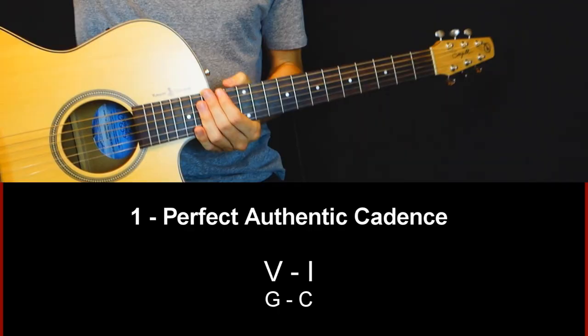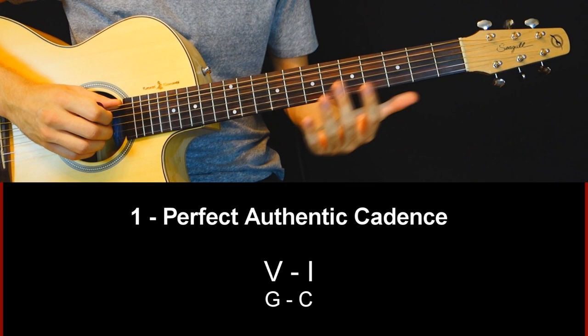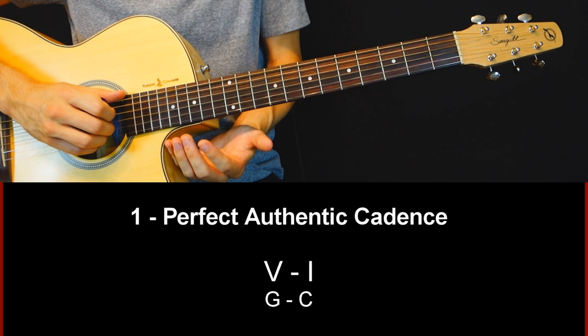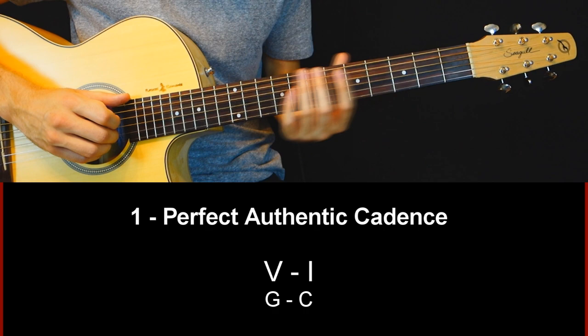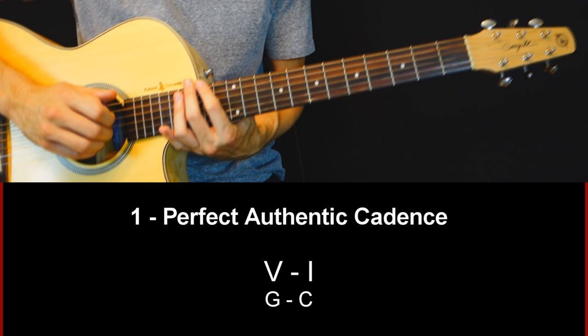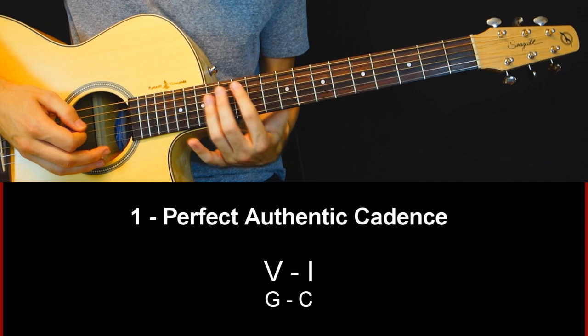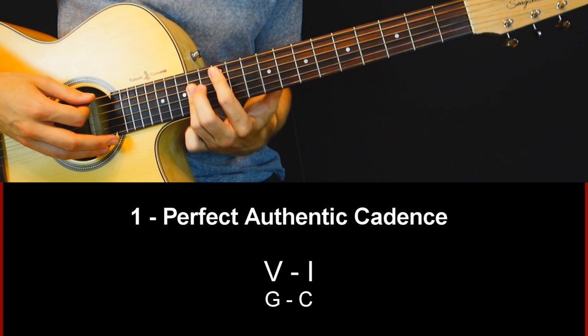The first cadence that you need to learn is the authentic perfect cadence. It is the most classical, most known way of ending a musical phrase, and I'm going to play it in C major for all of the cadences we are going to study so we have the same bass. Basically it's to use the fifth degree of your scale and resolve back to the root — it's classic. So in C major it's G to C, fifth degree to root chord.